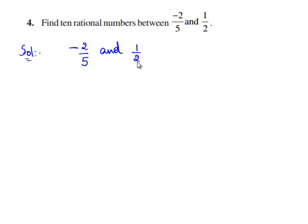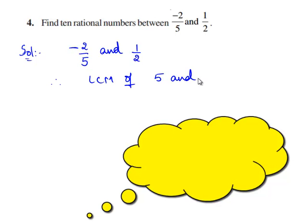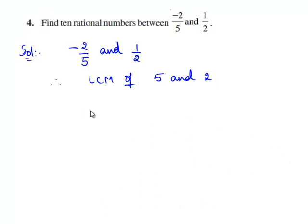Let us express these rational numbers with a common denominator. Therefore, we shall find the LCM of 5 and 2. As we know, the LCM of two prime numbers is their product itself. Therefore, the LCM of 5 and 2 is 5 times 2, which is equal to 10.